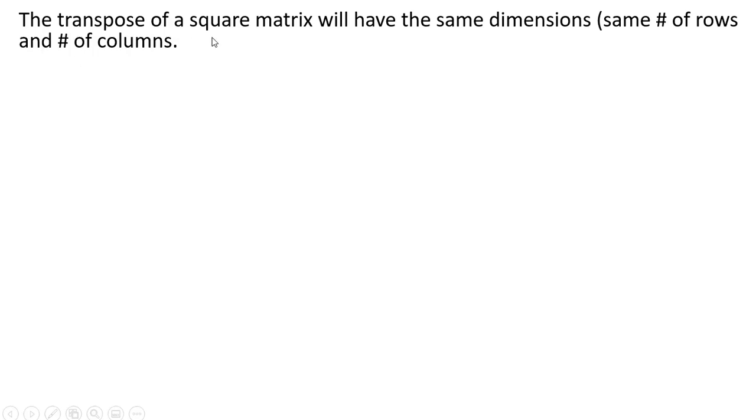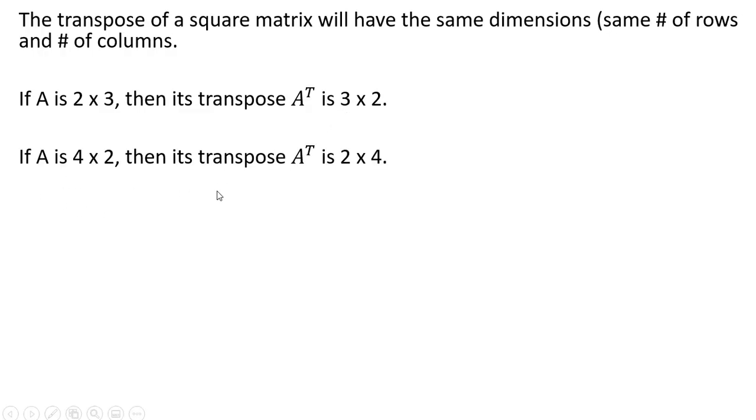So again, just to reiterate, the transpose of a square matrix will have the same dimensions, same number of rows and number of columns. If A is a 2 by 3 matrix, its transpose will have a different dimension. It will now be 3 by 2. And if A is a 4 by 2, its transpose will be 2 by 4.